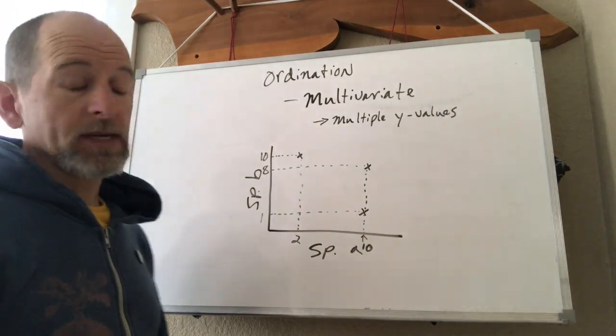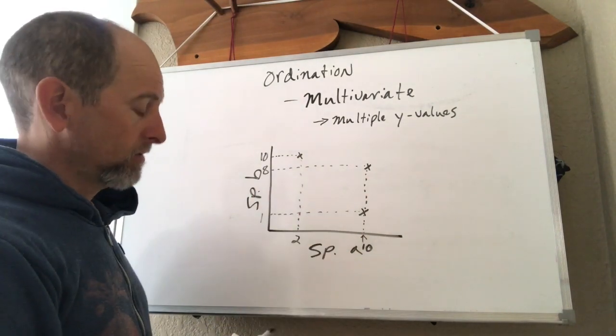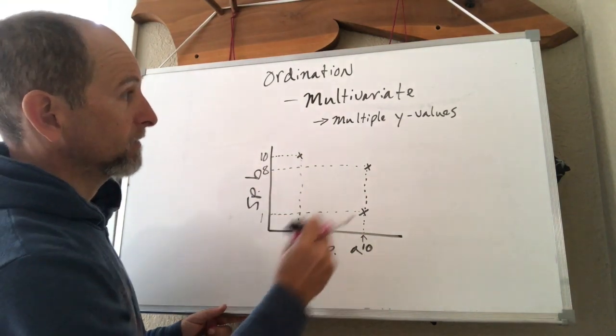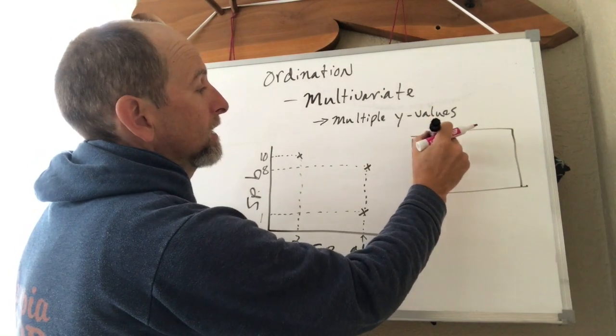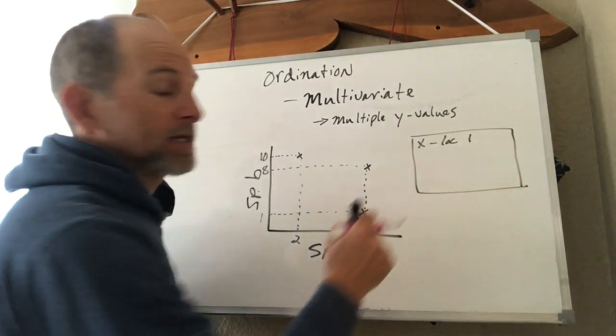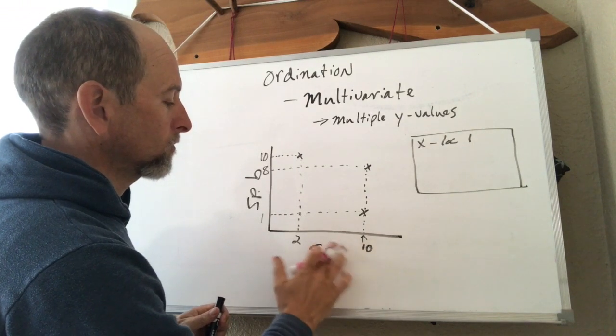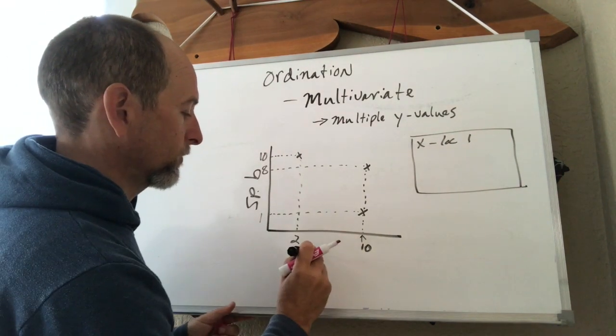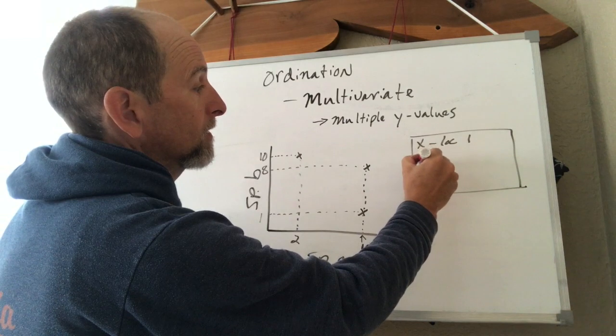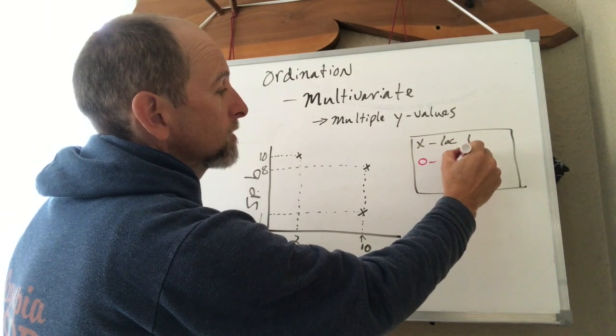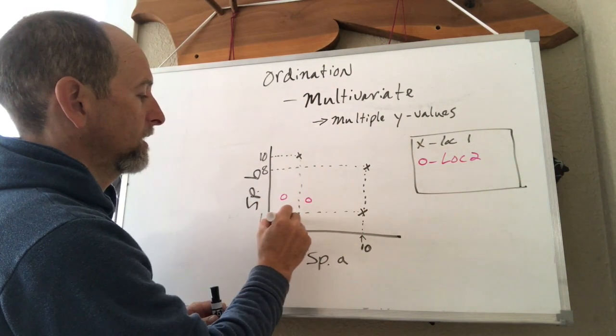So all of these individual samples differ in terms of species A and species B. And if the x's represent location one, let's put a little key here. X is going to be location one, whatever that is. Let's just pretend we have one location where we've sampled communities for these two species. I'm just going to redraw this so it's a little easier to see. Then we might have another place, location two, where we sample again. And let's say we go to location two and we get data like this.